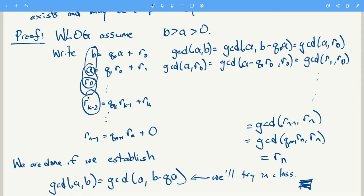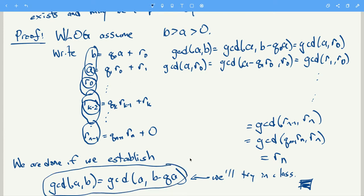Eventually you see that the GCD of a and b equals each successive GCD all the way down to GCD(r_{n-1}, r_n). Since r_{n-1} is a multiple of r_n, the GCD of r_n with a multiple of r_n must be r_n. That last non-zero remainder is what we wanted to establish, and it all works as long as we establish that key property, which we'll do together in class.